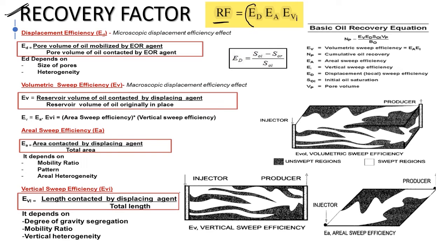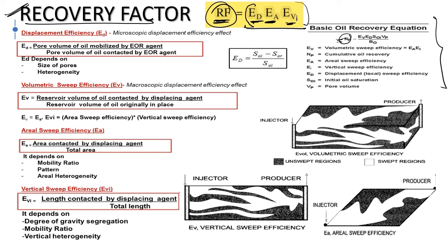Recovery factor is a product of displacement efficiency, aerial efficiency, and vertical sweep efficiency. The basic oil recovery equation: Np (produced volume) equals Ev (volumetric sweep efficiency) times Ed (displacement efficiency) times Vp (pore volume) times Soi (oil saturation) divided by Bo. Volumetric sweep efficiency Ev equals aerial efficiency Ea times vertical efficiency Ei. Ed is displacement efficiency, Soi is initial oil saturation, and Vp is pore volume.